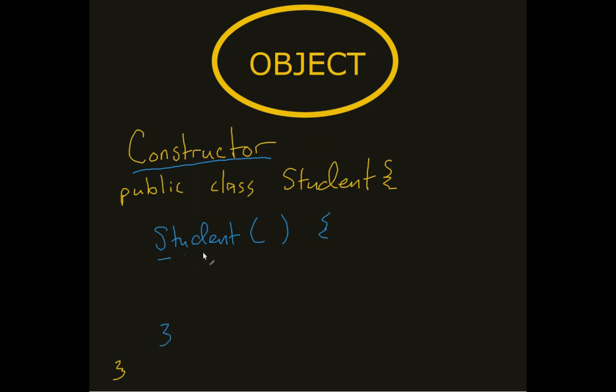Now what does this do? This student, notice how I don't throw out any arbitrary, there's no void or public static void, I don't do any of that stuff. All I do is I say student. And what this builds is now what's known as a constructor.